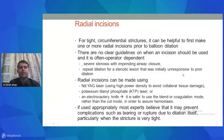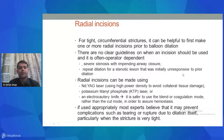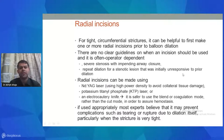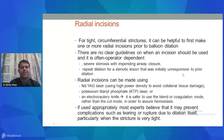For tight circumferential strictures, radial incisions prior to balloon dilatation are helpful. There are no clear guidelines on when incisions should be used — it is often operator dependent. In severe stenosis with impending airway closure or lesions unresponsive to prior dilatation, radial incisions should be made with an electrocautery knife or laser. An Nd:YAG laser at high power density can minimize collateral tissue damage; a KTP laser or electrocautery knife should be used in blend or coagulation mode rather than cut mode to ensure hemostasis. Most experts believe this may prevent tearing or rupture during dilatation, particularly for very tight strictures.